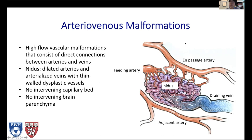Here's some basic terminology when people talk about AVMs. We talk about the nidus, which is the actual AVM. There's the feeding artery — these are the vessels that bring blood to the AVM. And there's the draining vein, which brings blood away from the AVM. There are also en passant arteries — blood vessels that eventually feed the brain but also send little branches to the AVM. These are unrelated vessels that happen to pass by, as opposed to feeding arteries, which end in the AVM and don't go on to feed anything else.